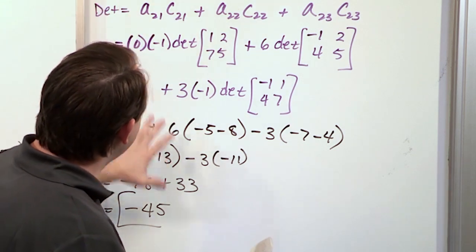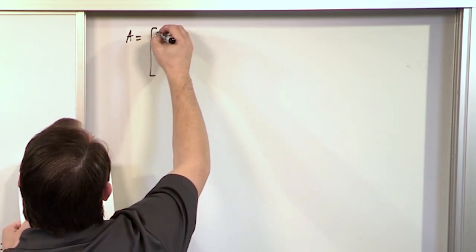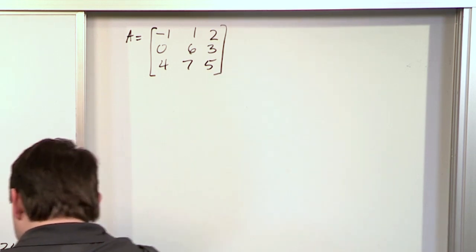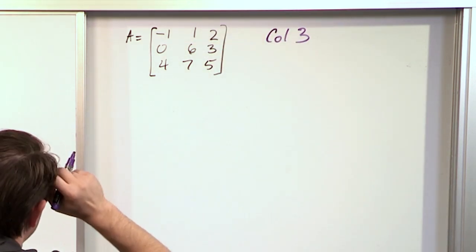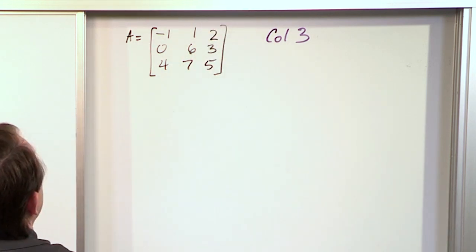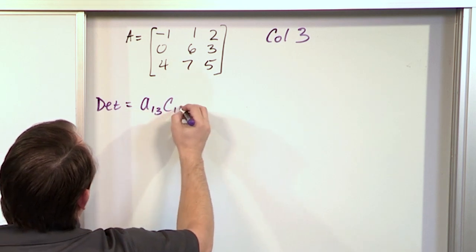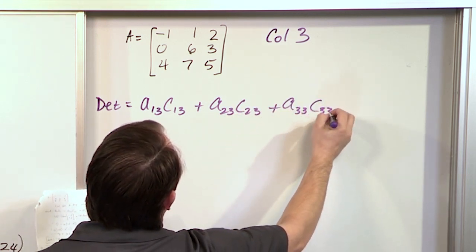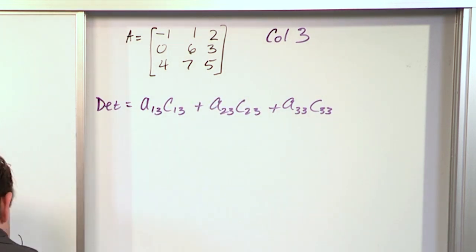Now let's go through a column to show there's no real difference. Same matrix — negative one, one, two, zero, six, three, four, seven, five. We'll expand through column three, going through elements two, three, and five. The determinant equals A_13 times C_13 plus A_23 times C_23 plus A_33 times C_33 — each element times its cofactor. Since i plus j = 1+3 = 4 (even), the cofactor at position (1,3) is positive.